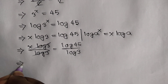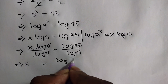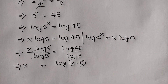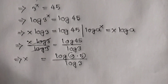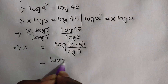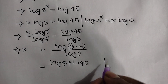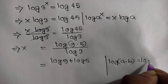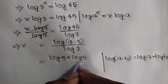So x is equal to log of 9 times 5 over log of 3, because 9 times 5 is the same as 45. We can write this as log of 9 plus log of 5 over log of 3, according to the formula log of a times b is equal to log a plus log b.